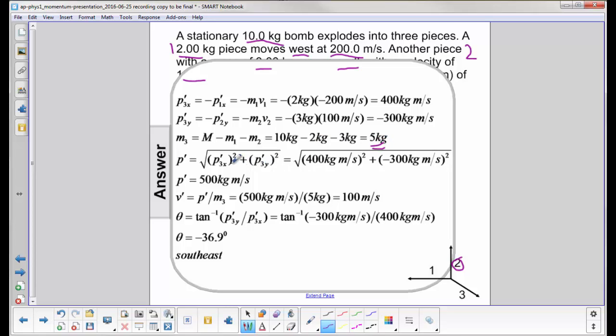I now need to find the total momentum of this third object. Well, it's going to be p3 x prime squared plus p3 y prime squared, take the square root and I get 500 kilogram meters per second.